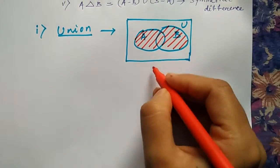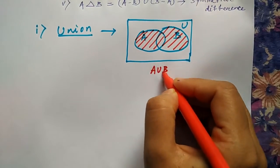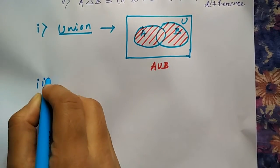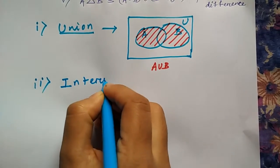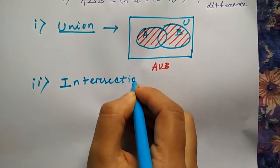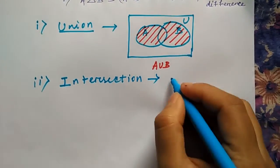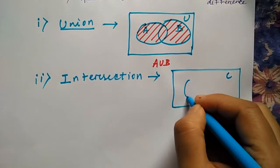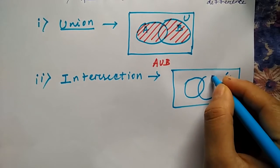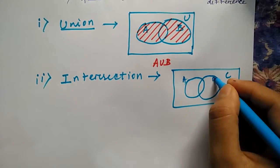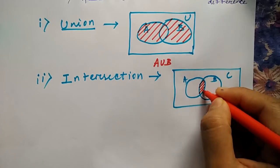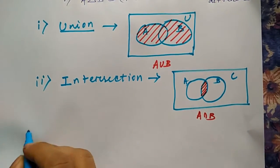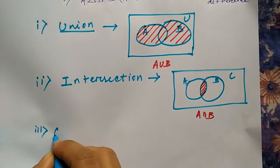Next we'll see intersection. The same way, you draw the universal set and both sets A and B. Only this particular part in the middle will be A intersection B. Then comes the complement.